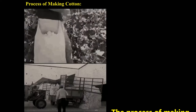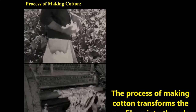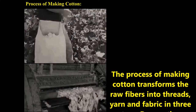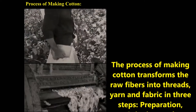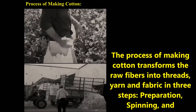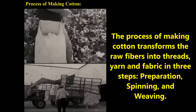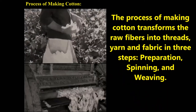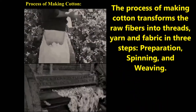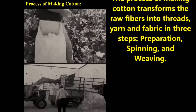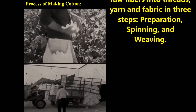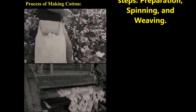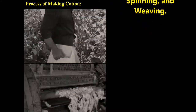Let us discuss the process of making cotton from field to fabric. The process of making cotton transfers raw fibers into threads, yarn, and fabric in three steps: first is preparation, second is spinning, and third is weaving.